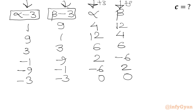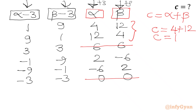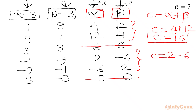Our roots must be distinct, so we eliminate the cases where alpha equals beta: the (6, 6) case and the (0, 0) case. For the remaining cases, C equals alpha plus beta. From (4, 12) or (12, 4): C equals 16. From (2, −6) or (−6, 2): C equals −4.